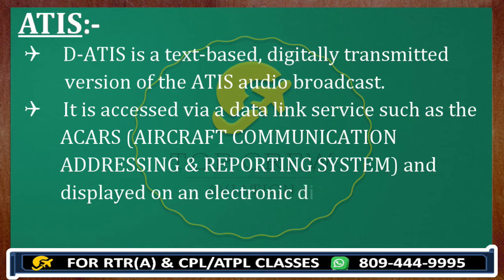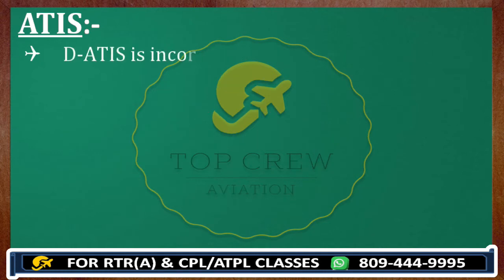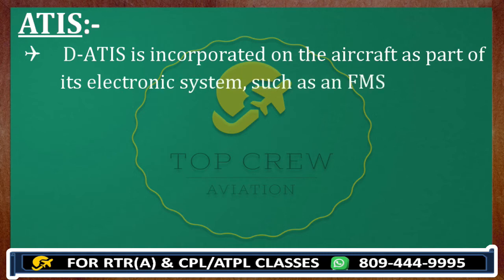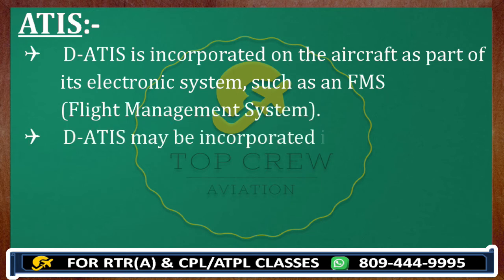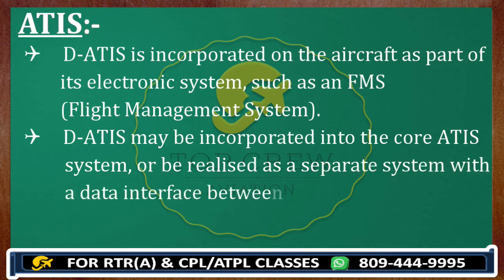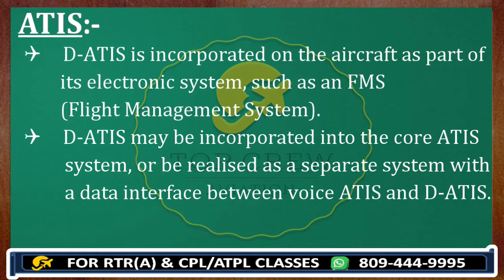DATIS information is displayed on an electronic display in the aircraft, so there is no need to listen and write. DATIS is incorporated on the aircraft as part of its electronic system, such as the FMS — Flight Management System, which we will cover in navigation in detail. DATIS may be incorporated into the core ATIS system or realized as a separate system with a data interface between voice ATIS and DATIS.